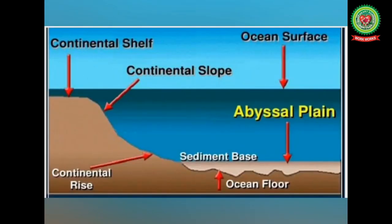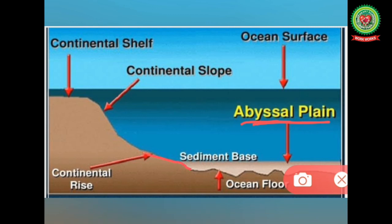The next division of the ocean floor is the abyssal plain. Where the continental rise ends, the deep sea plain known as the abyssal plain begins. These are almost flat areas with very gentle slope or flat terrain, covering about 40% of the ocean floor. Their depth varies from 3,000 to 6,000 meters, and they are present in all major oceans and several seas in the world.